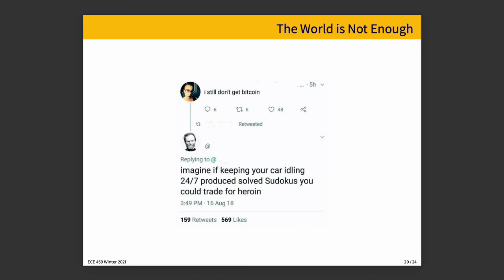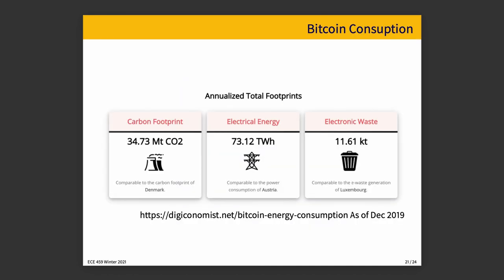On top of magical internet money not necessarily being a successful product, it's also the case that it uses a lot of electricity and resources to mine Bitcoin. In some cases, depending on how expensive or inexpensive electricity is where you live, it is probably preferable to just buy Bitcoin on some exchange if you want some for some reason, because the cost of mining is mostly the cost of electricity. This is from December 2019, but I checked in November 2020 and the numbers weren't that different. The carbon footprint of the Bitcoin network is comparable to that of the entire country of Denmark; the power consumption is comparable to the whole country of Austria; and the electronic waste generated is comparable to that of the entire country of Luxembourg.